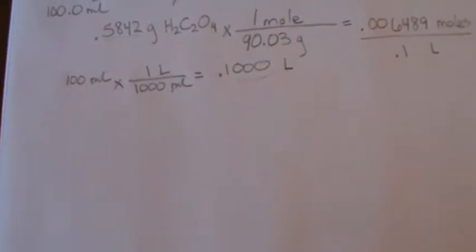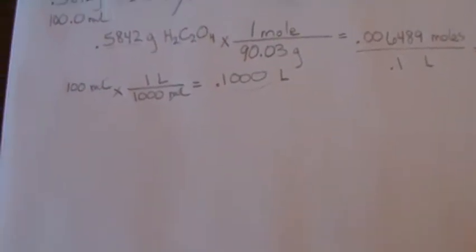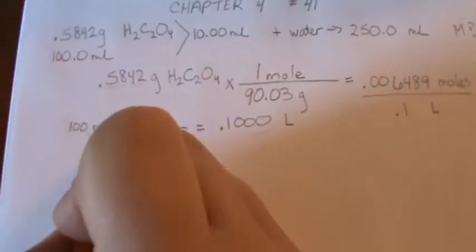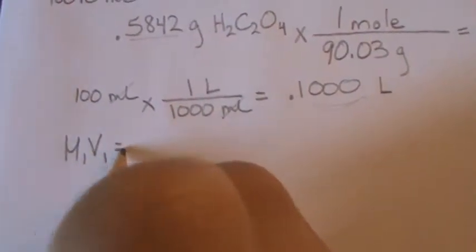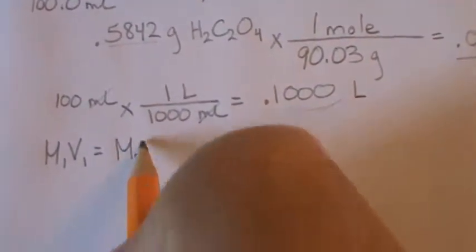So let's think about our second step now. Now our second step is our dilution. And for the dilution equation, we do M1 V1 equal to M2 V2.